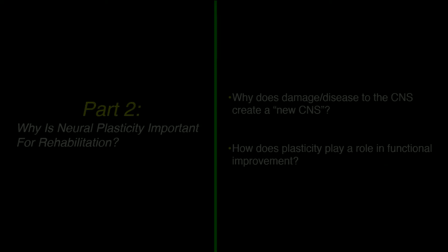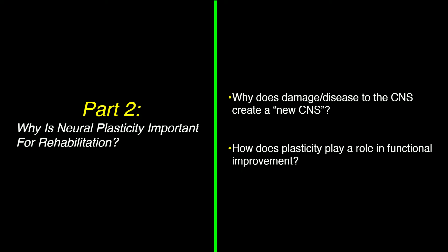Now we move on to Part Two: why is neuroplasticity important for rehabilitation? One key point is why damage or disease to the central nervous system creates what I would call a new nervous system — not just a brain minus a piece of tissue, but a brand new nervous system. The second point is how plasticity plays a role in functional movement or functional improvement.